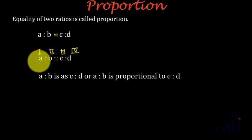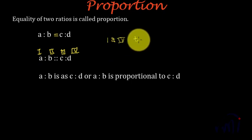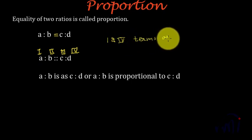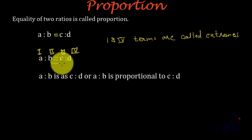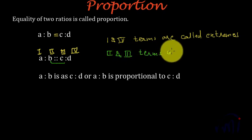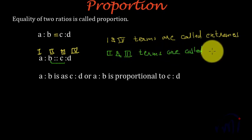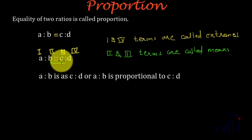These two terms which are in extreme — that is the first term and the fourth term — are called extremes. And these two terms in the middle, B and C, the second and third term, are called means. So the terms in the extreme are called extremes and the terms in the middle are called means.